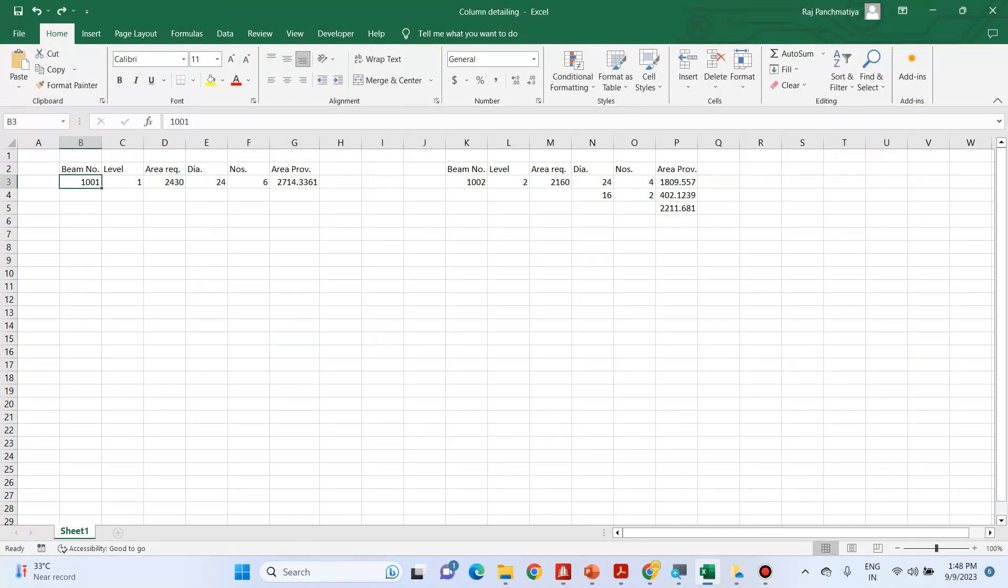So let me open excel sheet. So here the beam number is 1001 and the area required as per STAT is 2430 mm2. So I am assuming 24 mm bars and I am providing 6 bars. So area provided is 6 times dia of 1 bar that is pi by 4 times 24 square.